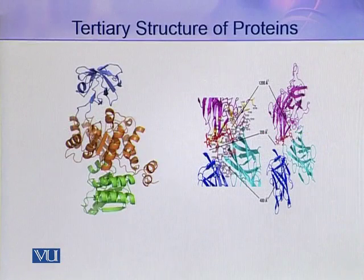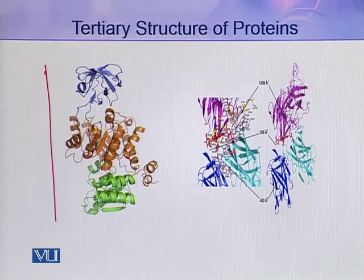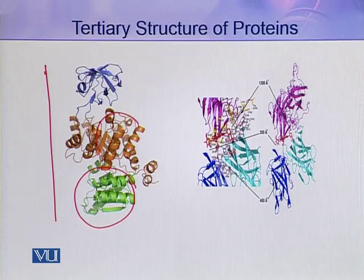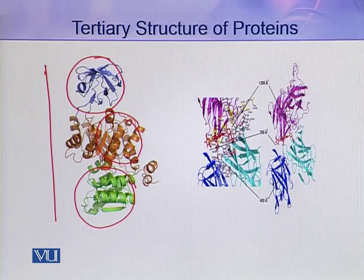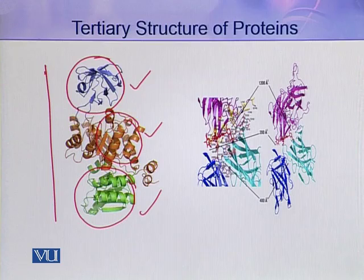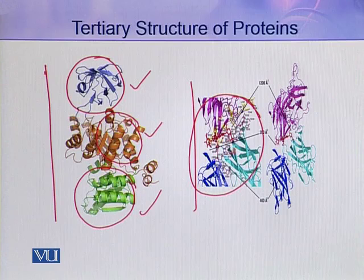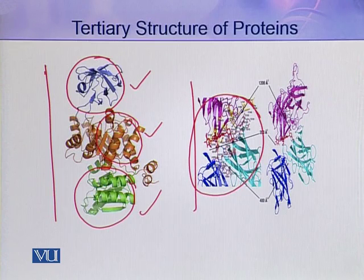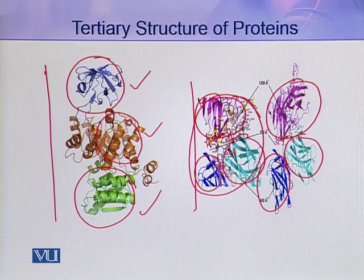Here in this picture you can see a protein at its tertiary level of organization. In this protein you can clearly see one domain, another domain, and a third domain — so this whole molecule contains three domains and appears trilobular. Similarly, in another molecule you can see a three-dimensional protein structure at its tertiary level of organization. Although it is tightly folded and it is hard to distinguish domains, on close observation you can find three domains present in this protein molecule.